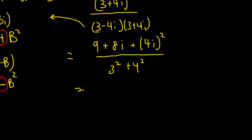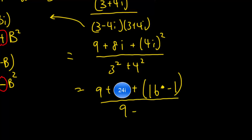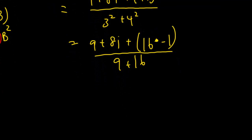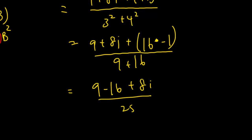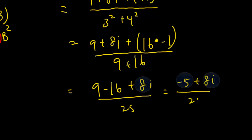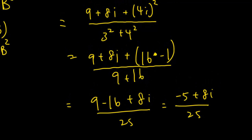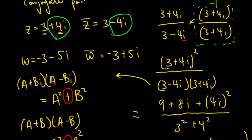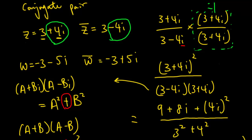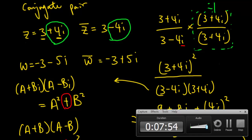So that gives 9 plus 8i plus 16 times negative 1 — since i squared equals negative 1 — over 9 plus 16. That simplifies to 9 minus 16 plus 8i over 25, which equals negative 5 plus 8i over 25. Conjugate pairs are also important when solving roots, which we'll cover in later lectures. If you have any questions, drop a message on the discussion board and I'll get back to you as soon as possible.